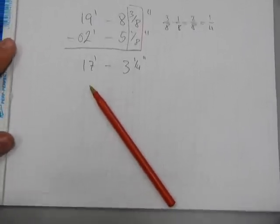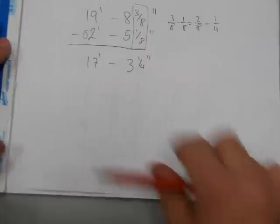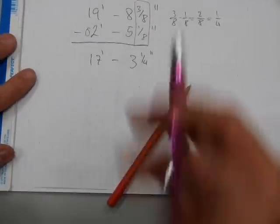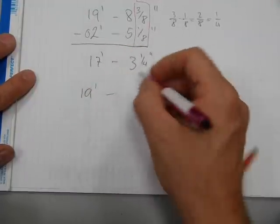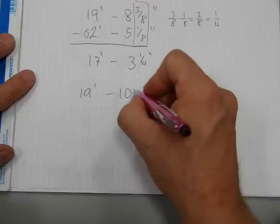Now let's take a look at one where trading or regrouping or borrowing is necessary. Let's start again with, 19 feet, 10 inches and,